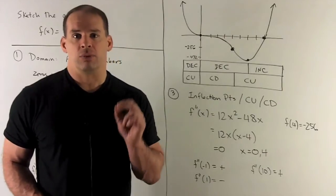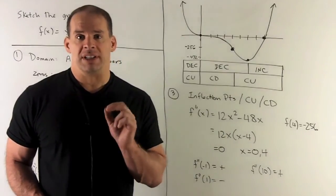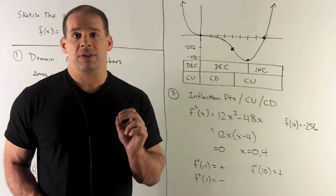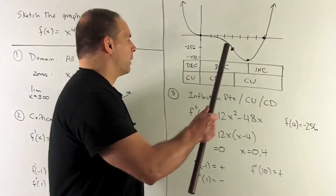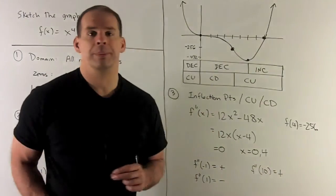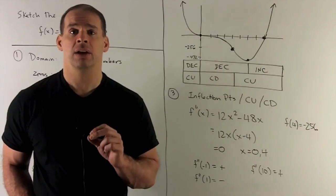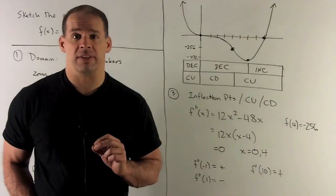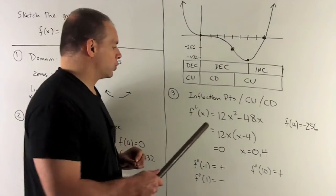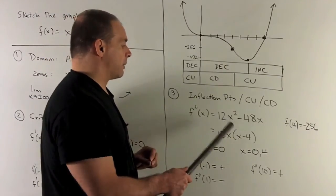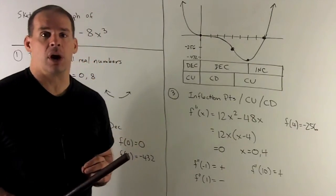Now, let's check for regions of concavity. As with increasing and decreasing, it's going to be enough to check a point in each region when I cut off my regions by 0 and 4. I can use the same points: -1, 1, and 10. Put them into the second derivative, see what comes out. If I put -1 in, I have 12 times -1 times -5, that's going to be positive. So we're going to be concave up on that side of 0.